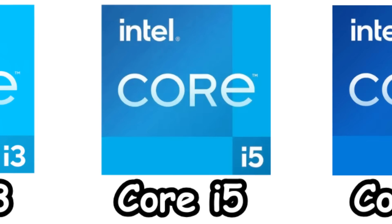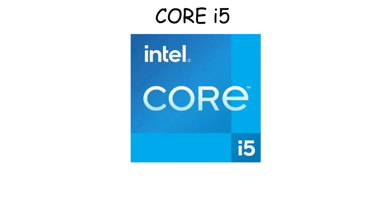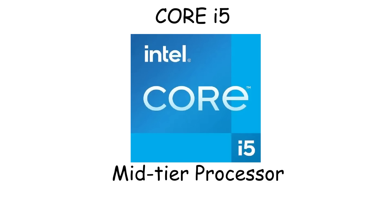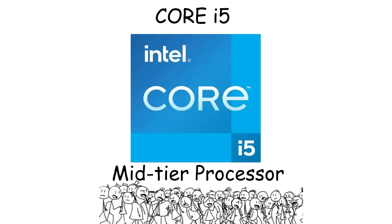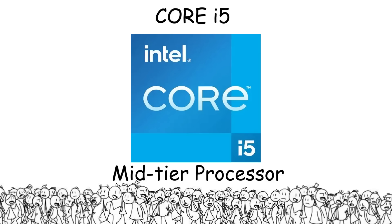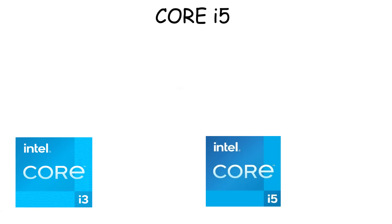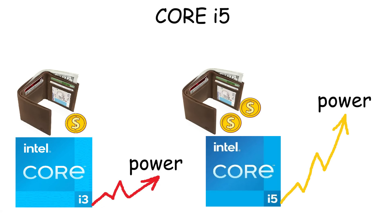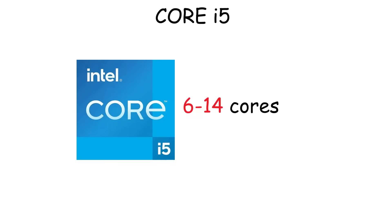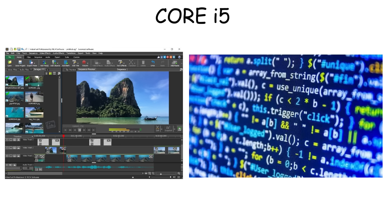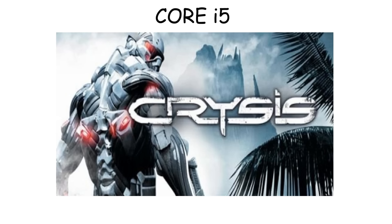Intel Core i5 is the mid-tier processor and also one of the most used CPUs by a lot of people. That's because it's still cheap but also more powerful than Intel Core i3. i5 processors come with six or even 14 cores, which makes them good enough for photo or video editing, programming, and gaming as well.